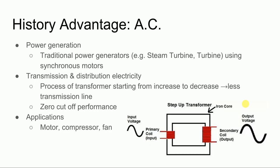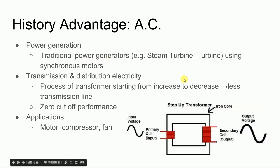Hi, I'm Lizzy Wang, and I'm going to talk about how AC took advantage historically. Looking back 100 years, we can find how AC gained popularity from different areas. First is power generation — traditional power generators use synchronized motors, which are more convenient and highly efficient for producing AC. Second is transmission and distribution. Using transformers, voltage can be stepped up and then stepped down, decreasing transmission line losses. According to Faraday's law of induction, only changes in electromagnetic fields can be transferred, making AC suitable for high-efficiency transmission and distribution.